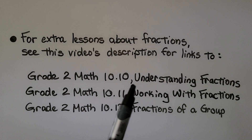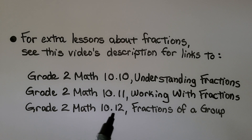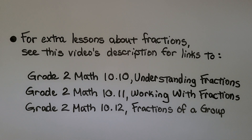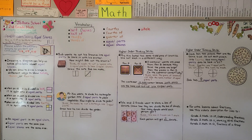Lesson 10.10 is about fractions and talks about one-third, one-fourth, and one-half written as a fraction. Lesson 10.11 talks about working with fractions, and 10.12 talks about fractions of a group, like two-thirds or five-sixths. I'm going to add those to the second grade math playlist — even though they're older videos, I think they're very helpful and educational. This GoMath textbook didn't talk about two-thirds or three-fourths or five-sixths, and I think it would be very good for you before you start third grade.